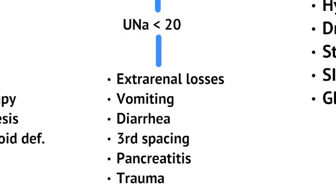For urine sodium less than 20 in hypovolemic hyponatremia, causes include vomiting, diarrhea, pancreatitis — where pancreatic edema leads to fluid loss — trauma, and sweating, all of which cause insensible loss of sodium and water. The body tries to retain sodium to stay hydrated, resulting in urine sodium less than 20. Those are the two categories causing hypovolemic hyponatremia.